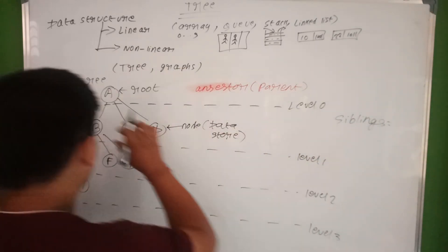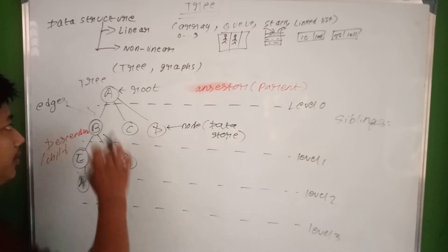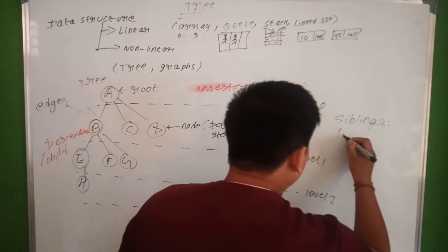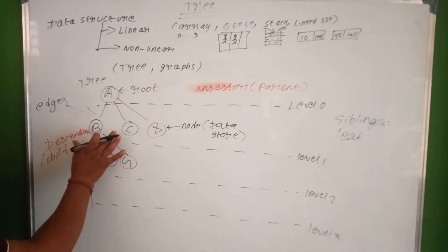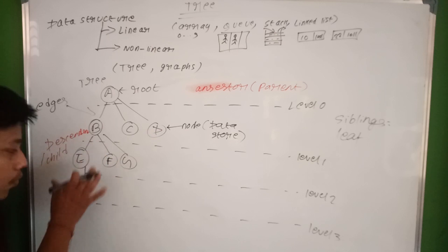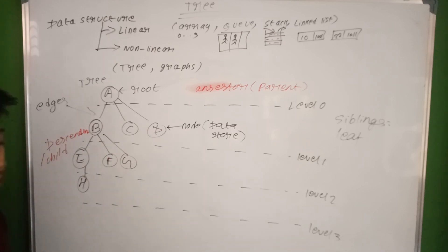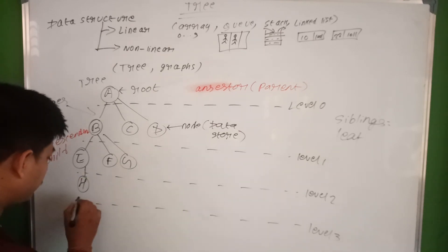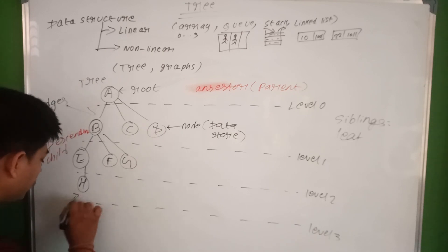Child and grandchild, and nodes at the same level are called siblings. A sibling is a sibling. A leaf node is a node that has no children — if a node has no child, it is a leaf.